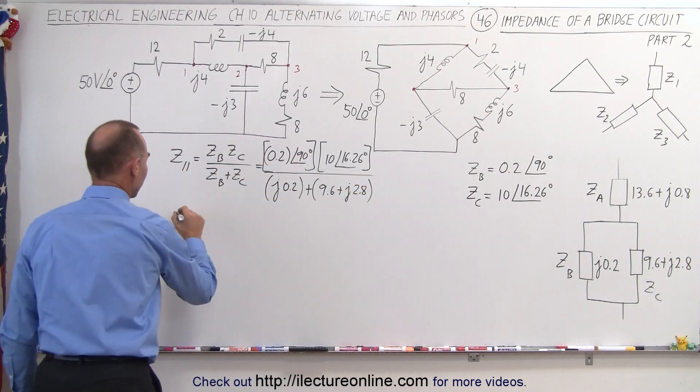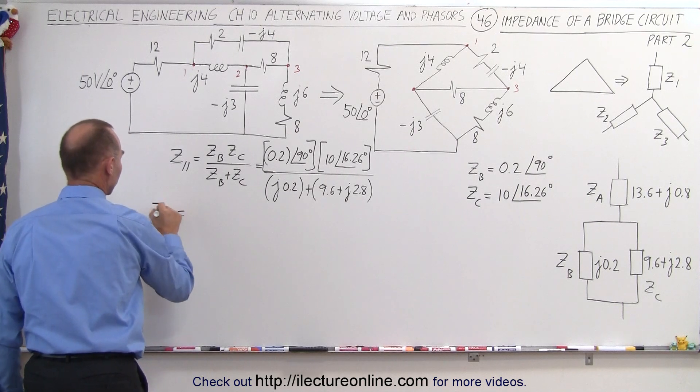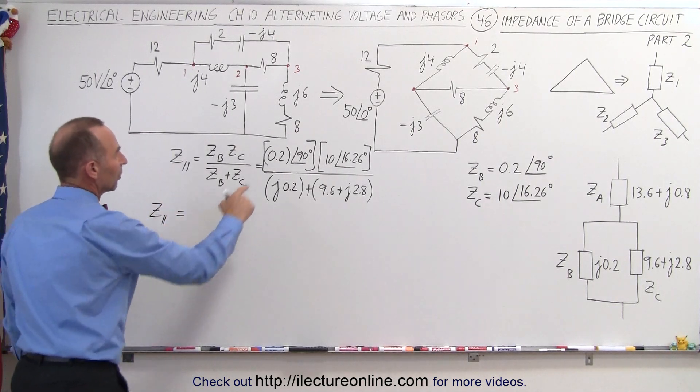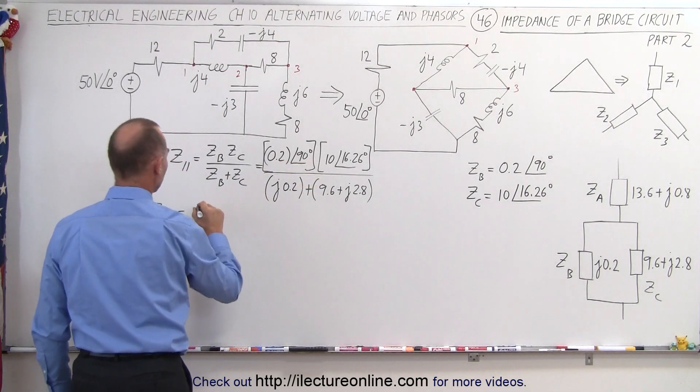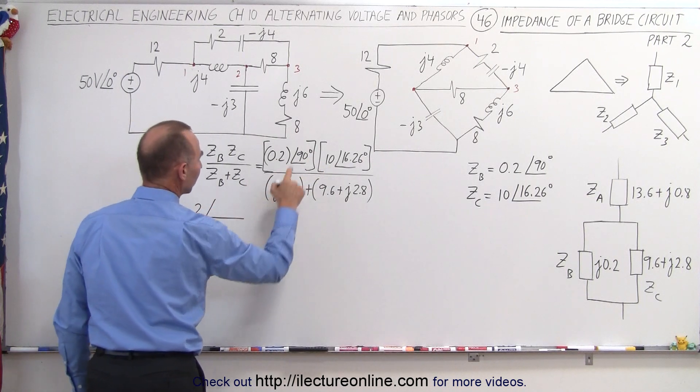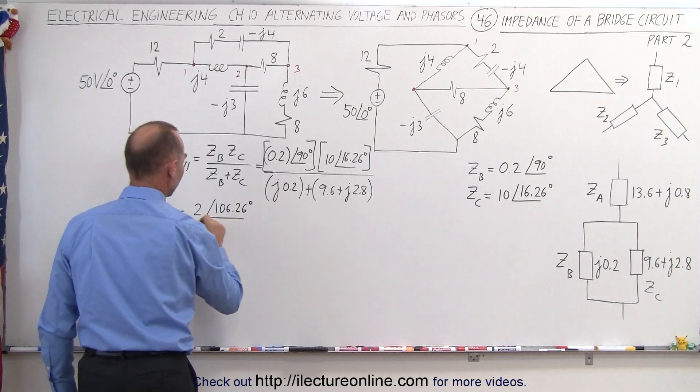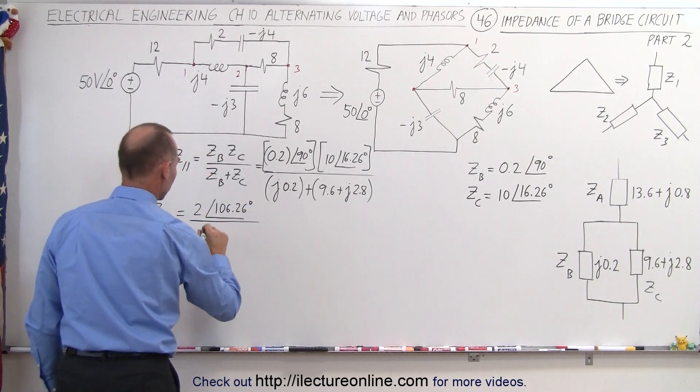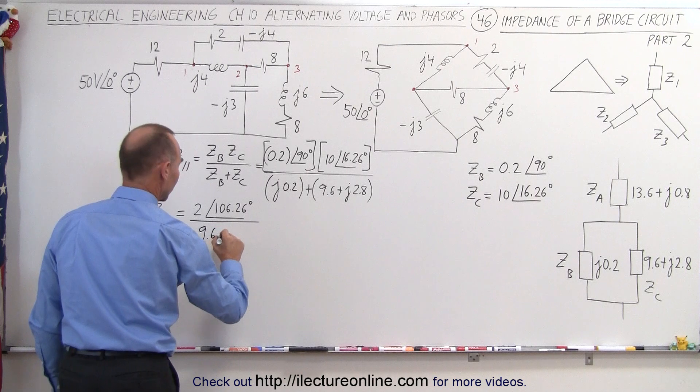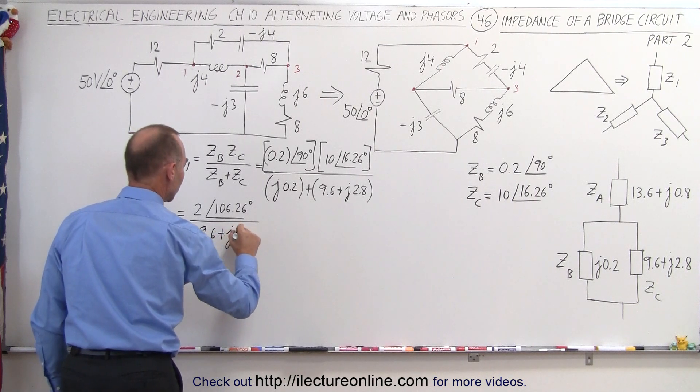That then simplifies to, so we're still looking for Z parallel. The product, 0.2 times 10, that would be 2, and the phase angle, when we add those together, would be 106.26 degrees. Divide that by the denominator, which would be 9.6 plus j3.